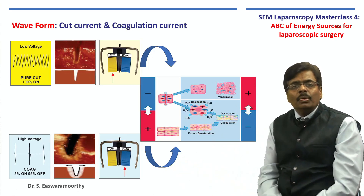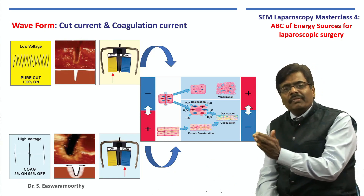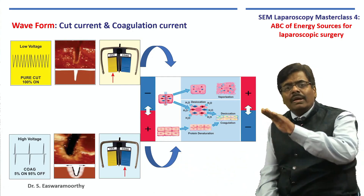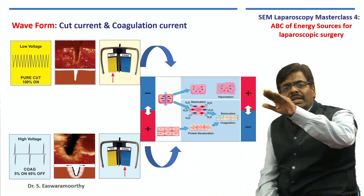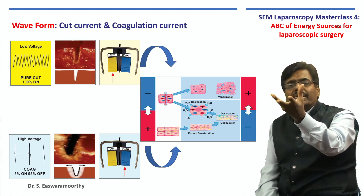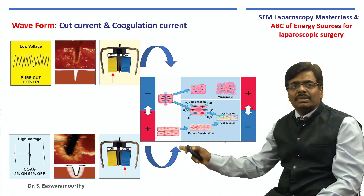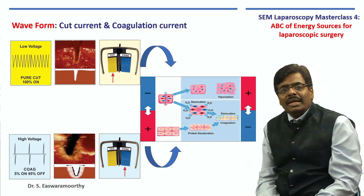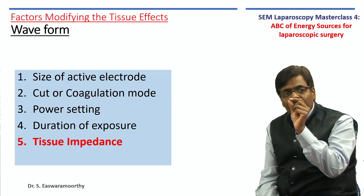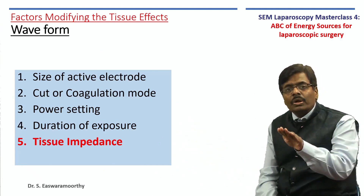We also have a via media: the blend mode, where you press the yellow cutting pedal but get blend 1, blend 2, or blend 3. In cut mode, the continuous flow of current causes a rapid rise in temperature in each cell — the water vaporizes, the cells explode, and you get a clean cut with very little lateral thermal damage. With the blue pedal, the intermittent duty cycle causes a gradual rise in temperature, so the water slowly evaporates, causing shrinkage — desiccation. Desiccation by the blue button; explosion by the yellow button — that is the basic principle of electrosurgery.